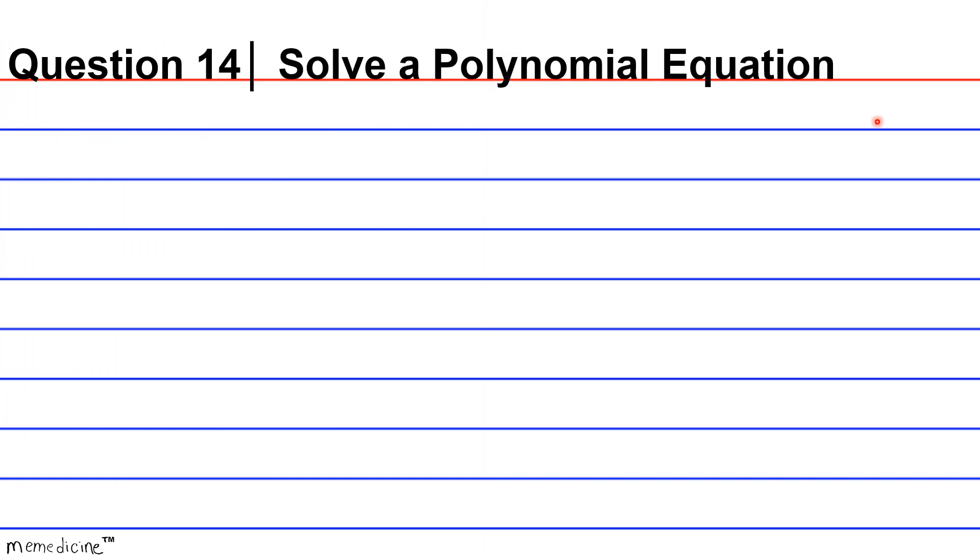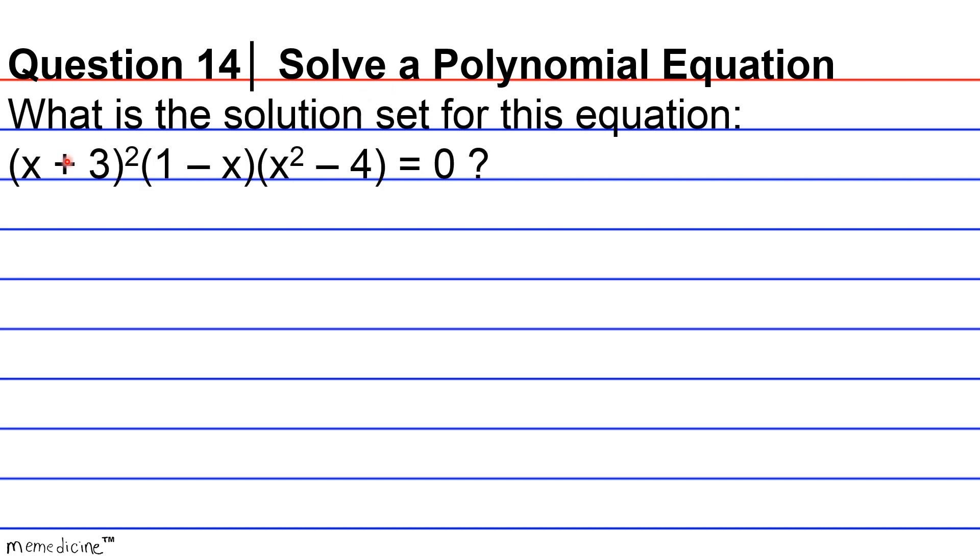Question 14. Solve a polynomial equation. And I want you to note that when you're prompted to solve a polynomial equation, you're not just required to simply factor. You actually have to figure out the value of the variable, which is usually denoted as x. What is the solution set for this equation? x plus 3 squared times 1 minus x times x squared minus 4 is equivalent to zero.